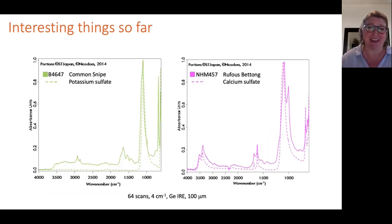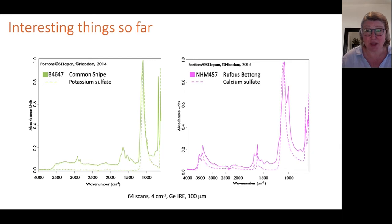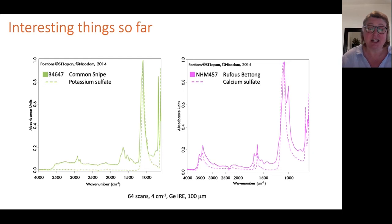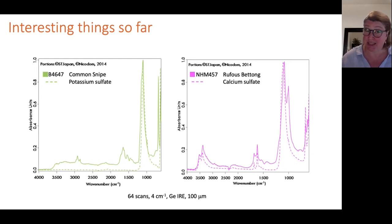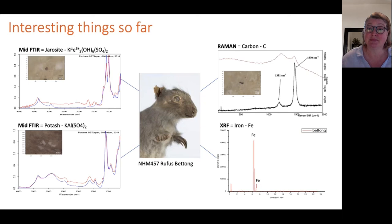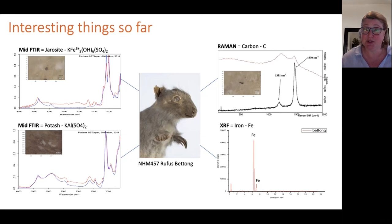Knowing about elements is important, but you can't fully understand preservatives without knowing about the organic components, which change over time. Using infrared techniques, some of those components can still be seen, and individual preservatives can be identified even after 100 years. In the common snipe I was able to find potassium sulphate, and in the rufous bettong, calcium sulphate. By combining multiple techniques you can get a good profile of the preservatives used in a recipe.